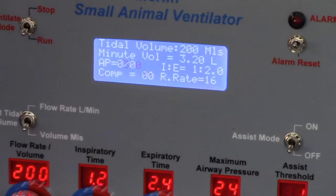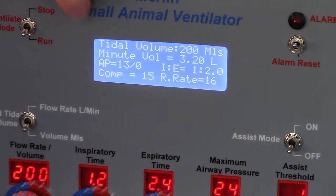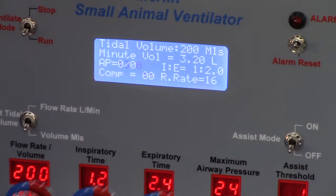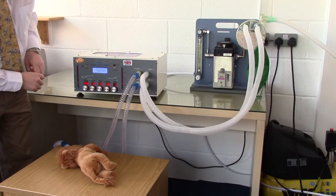We can see that the IE ratio is set to 1 to 2. And watch the airway pressure as it rises up to 13 during each breath. And notice the chest movements of the patient as it is ventilated.